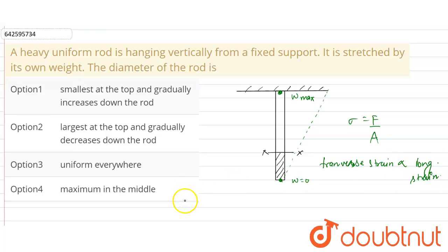So the diameter of the rod will be smallest at the top and gradually increases down the rod. So here at this point diameter will be smallest and here the diameter will be largest. Okay, so from choosing from the given options, that is option number one, smallest at the top and gradually increases down the rod, is the correct option for us.